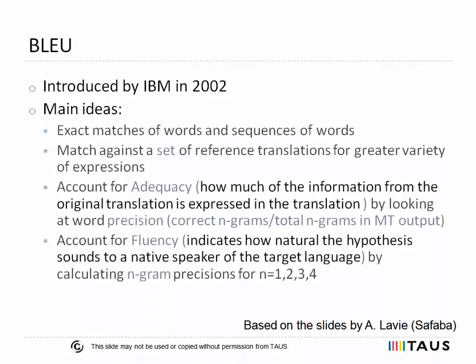The BLEU score is calculated by producing a similarity measure between the translation hypothesis and one or more human-made reference translations, which represent the expected solution of the system. BLEU ranks a translation higher or lower depending on two measures. The first measure is adequacy – a judgment on how much of the information from the original translation is expressed in the translation, measured by word precision. Word precision is the ratio between the number of correctly translated and placed n-grams, which are a contiguous sequence of words from a text, to the total number of n-grams in the output of the machine translation system.